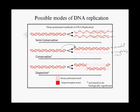A third conceptual model is that after or through the process of DNA replication, what ends up is that in each of the daughter DNA molecules, we end up with bits and pieces of old and new — parental and newly synthesized DNA — in both daughter DNA molecules. So this would be a somewhat random distribution of parental and newly synthesized DNA: the dispersive model.